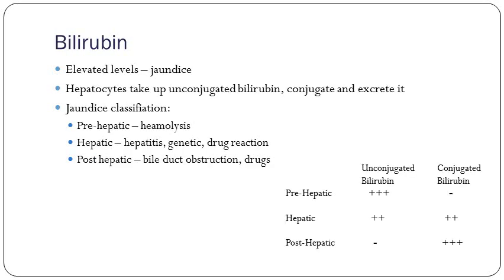Bilirubin is elevated in jaundice — jaundice is raised bilirubin. Jaundice classification: pre-hepatic, hepatic, and post-hepatic. When you get your LFTs, you will get a total bilirubin, and it's really useful to have the conjugated and unconjugated ratio. Conjugated bilirubin tends to get conjugated first in the liver. If the problem is beyond the liver, conjugated bilirubin is high. If the problem is before the liver, you get unconjugated bilirubin because it's not getting time to conjugate.